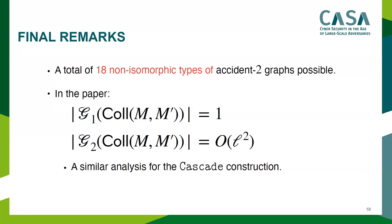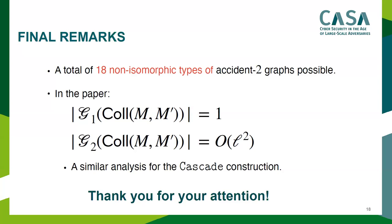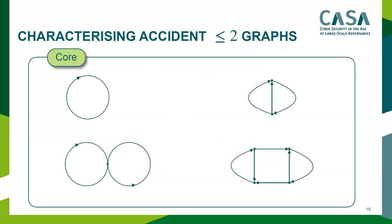Thank you for the great talk. Is there any question? How can you justify there are only 18 types of two-accident graphs? In the paper we actually prove these are the only possible graphs — for each core we show the number of possible graphs, and combining everything gives the number 18.